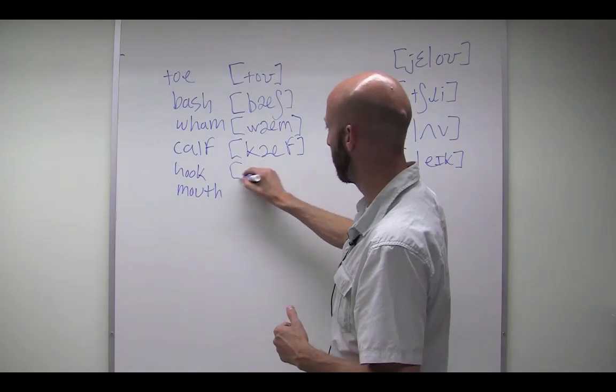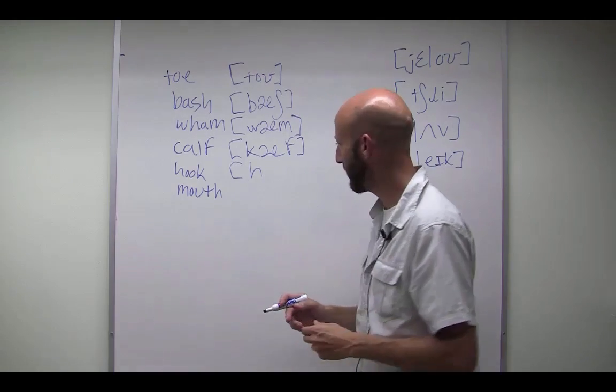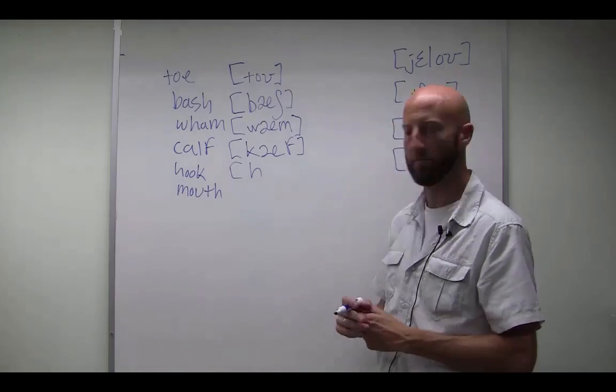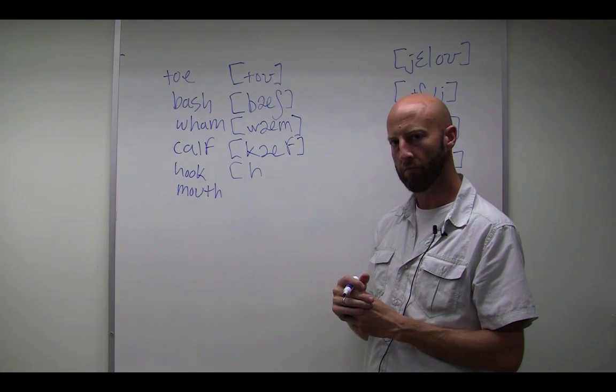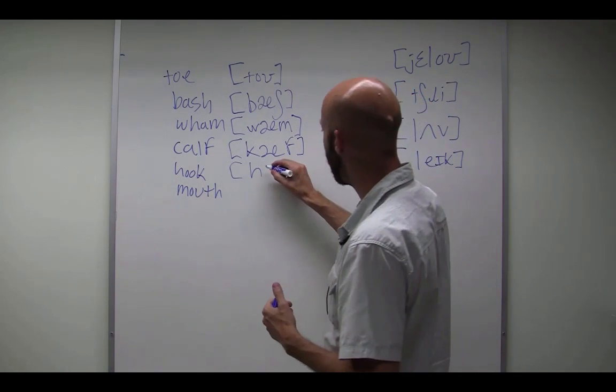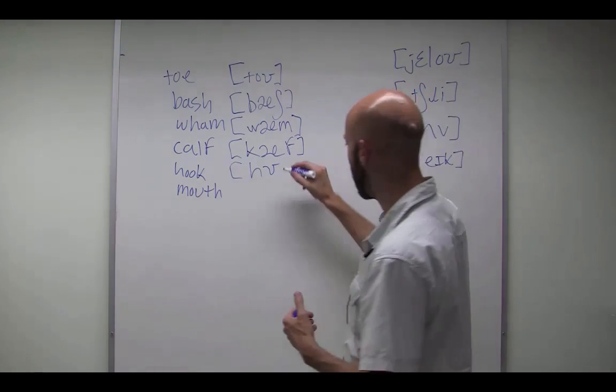Next, we have hook. H. So, we have our voiceless glottal fricative. H. Then, we have uh. Remember that one? Uh. It's the upside down omega symbol. Or, this one. H. And then, we have kuh. Hook.